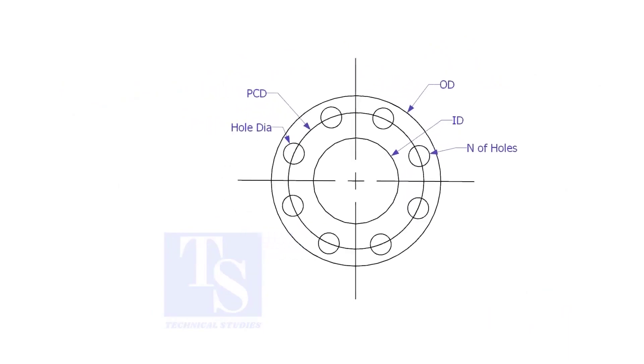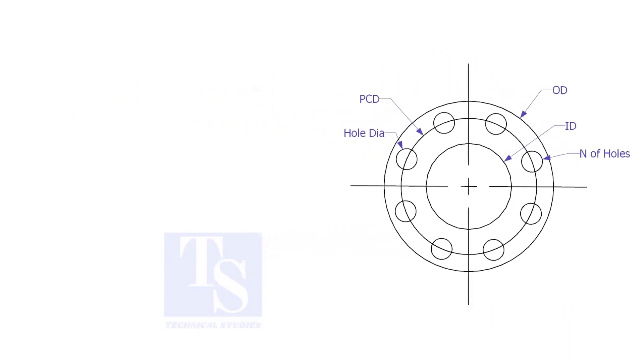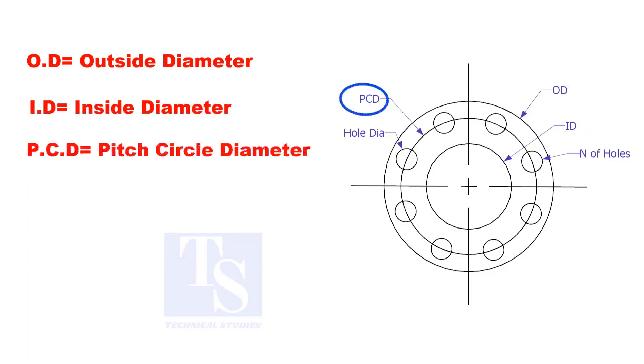To make a plate flange, we need to know the following things: OD, the outside diameter; ID, the inside diameter; PCD, the pitch circle diameter; number of holes; and the hole size.